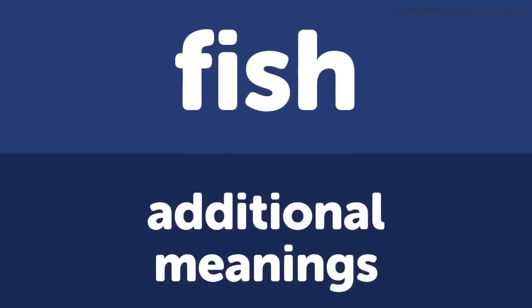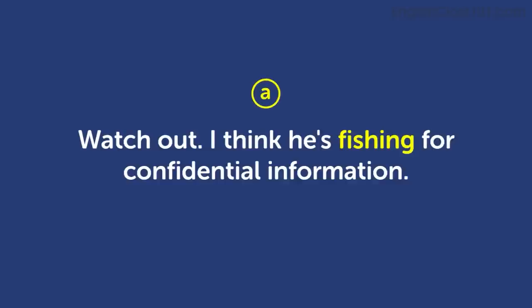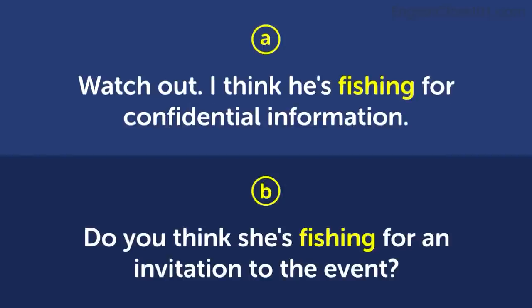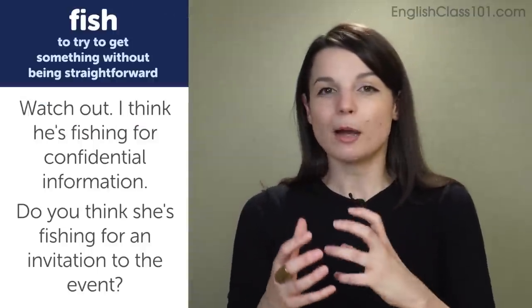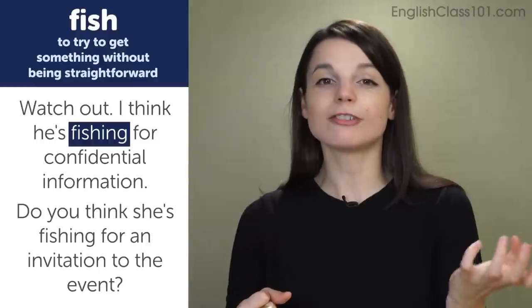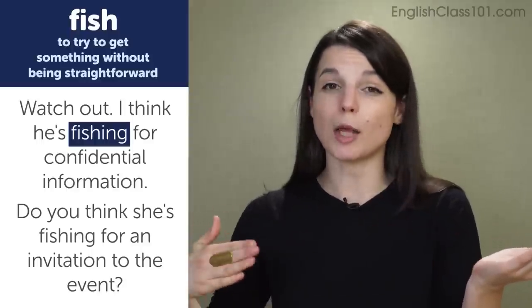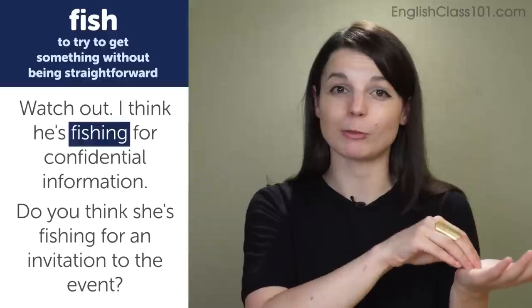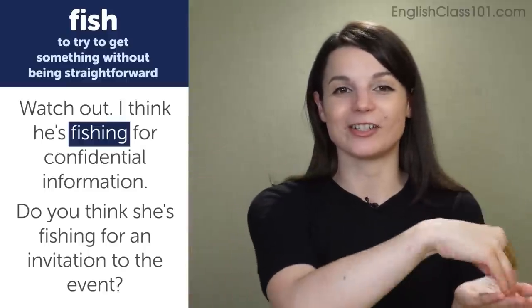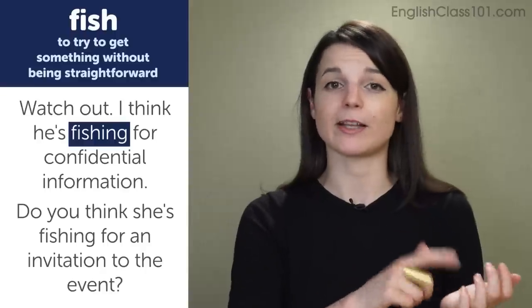The first additional meaning is to try to get something without being straightforward. Examples: 'Watch out — I think he's fishing for confidential information,' meaning he's trying to get confidential information but not asking directly; he's going around the issue. 'Do you think she's fishing for an invitation to the event?' This kind of fishing behavior tends to be suspicious — the person is not being straightforward in trying to get something.